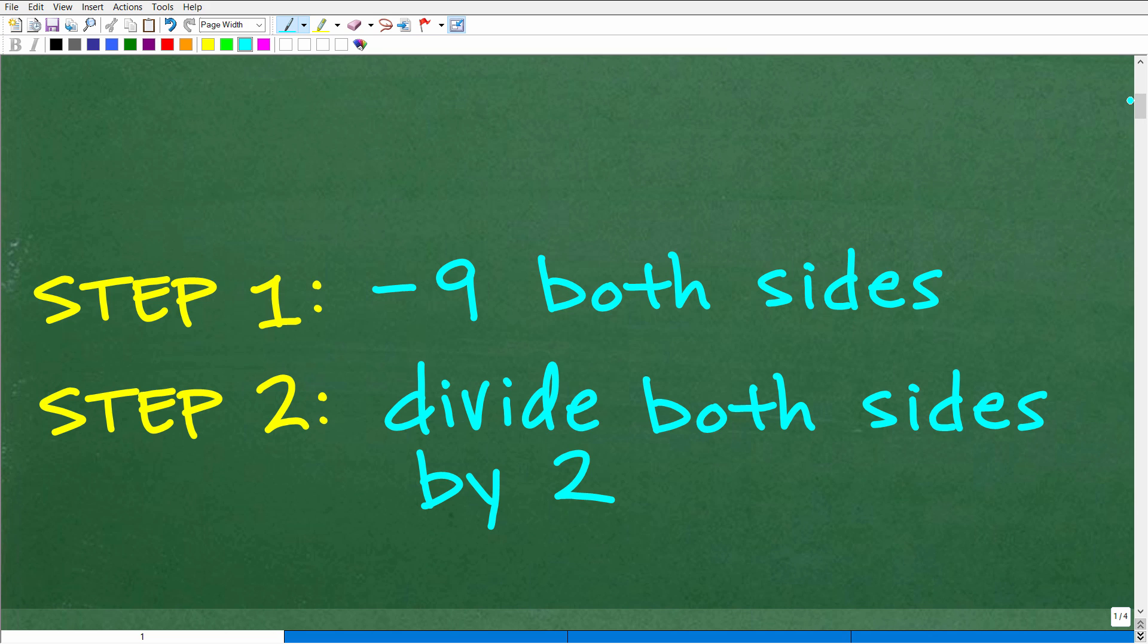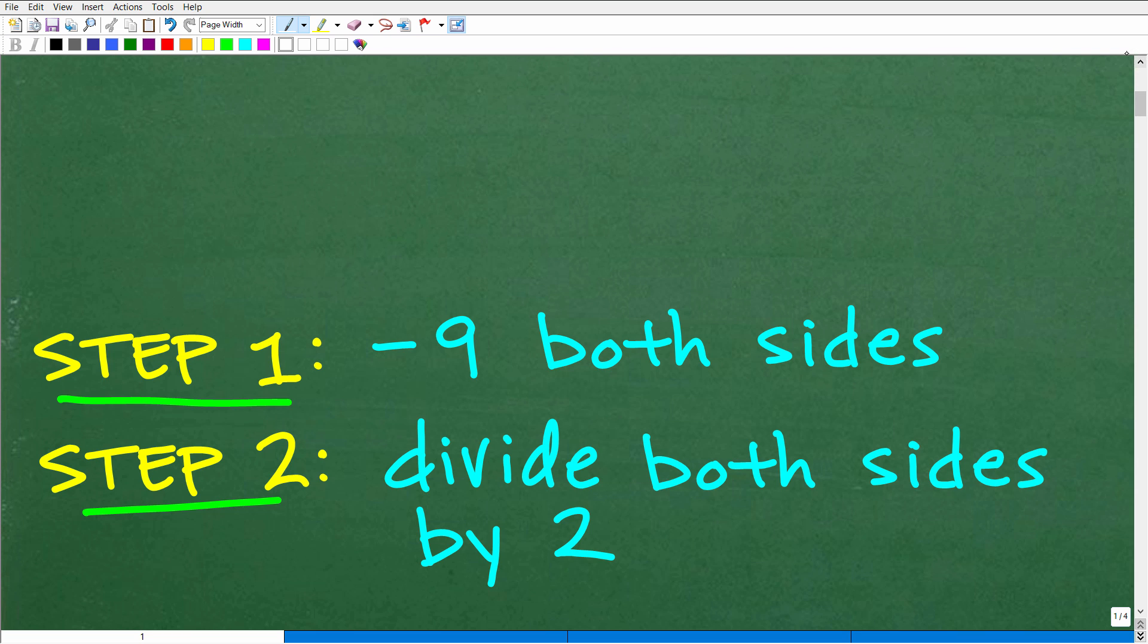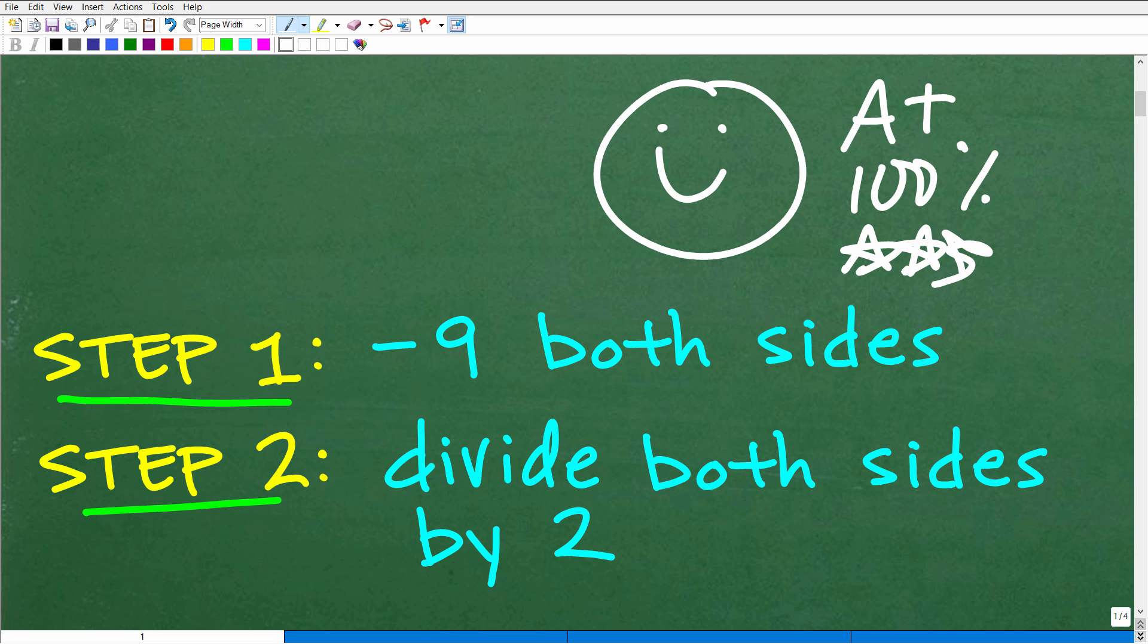Okay, so again, you could have wrote this differently and still been correct. But the first step here is we want to subtract 9 from both sides of the equation. And our second step would be to divide both sides of the equation by 2. So if you have something like this, where this would be the first step, subtracting 9 from both sides of the equation, and our second step, dividing both sides of the equation by 2, well, that tells me that you did this correctly or answered this particular question correctly. So let's go ahead and celebrate with a nice little happy face, an A plus a 100%. And multiple stars, you can tell your friends and family that indeed you understand a thing or two on how to solve two-step linear equations because that is what we're dealing with here.